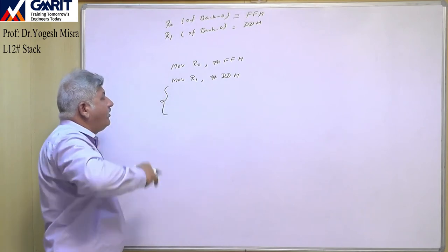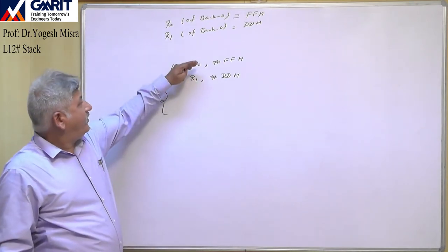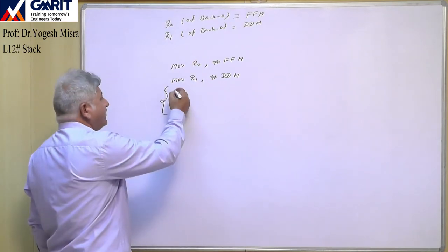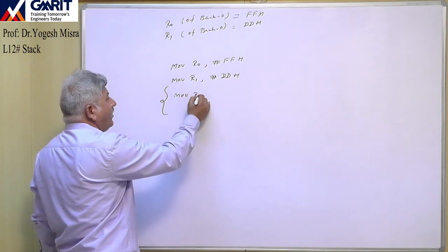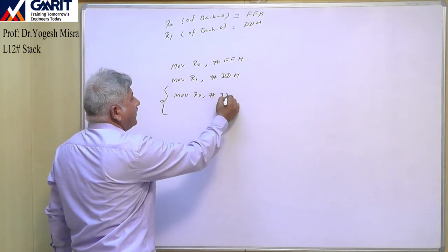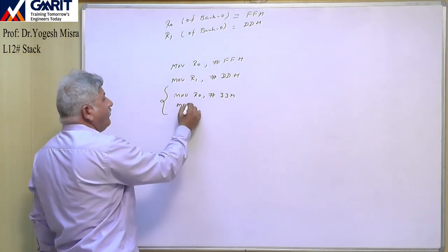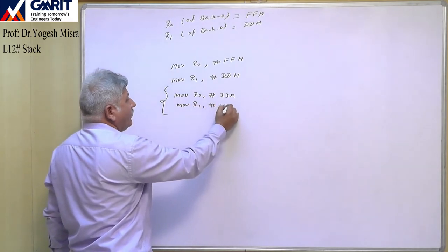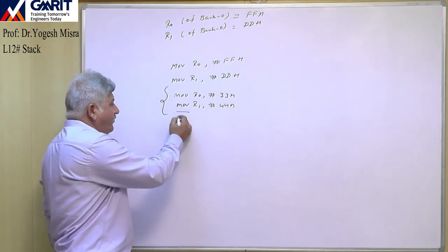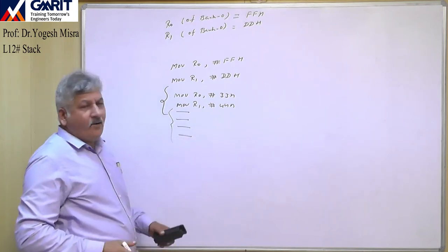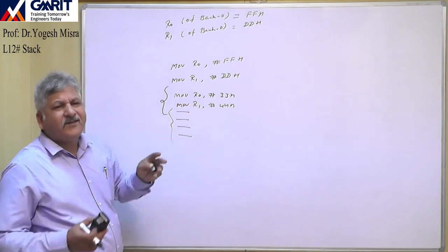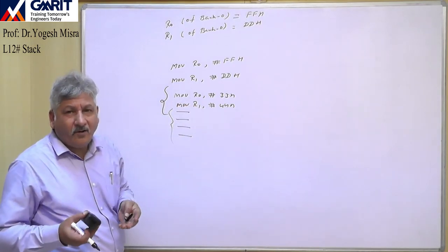Then we will use new values in these registers: MOV R0, #33H and MOV R1, #44H. In the remaining part of the program, we will use these new values of R0 and R1 for arithmetic or logical operations.